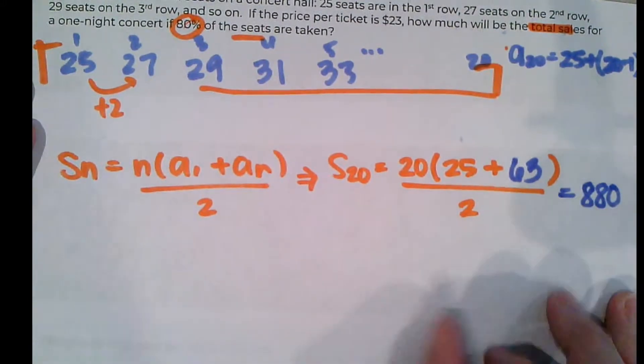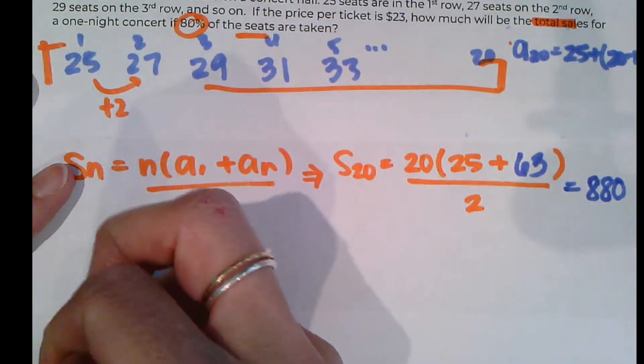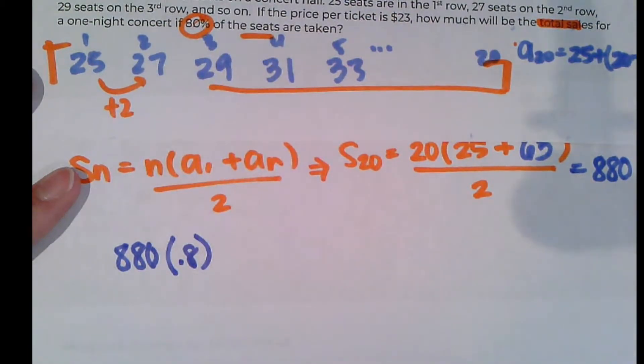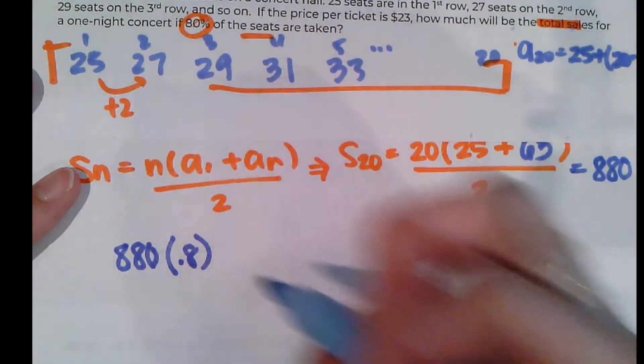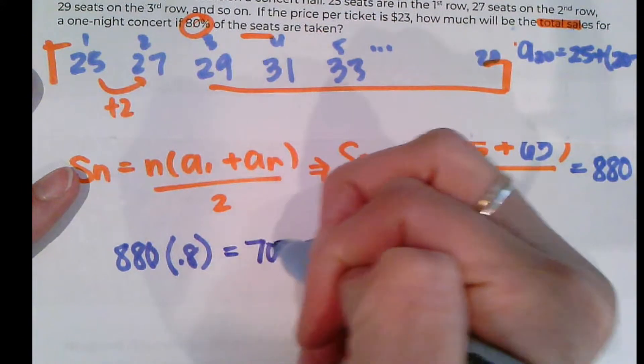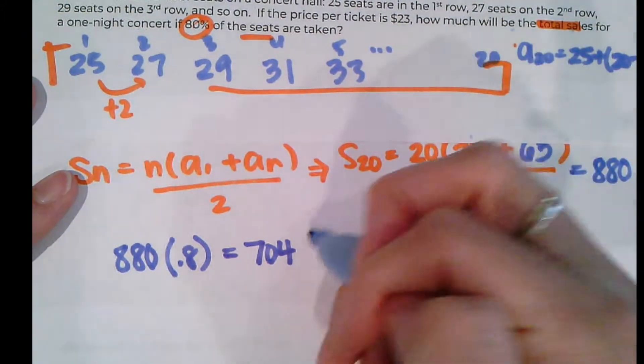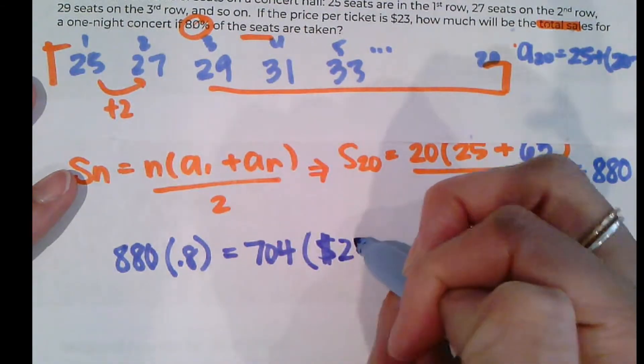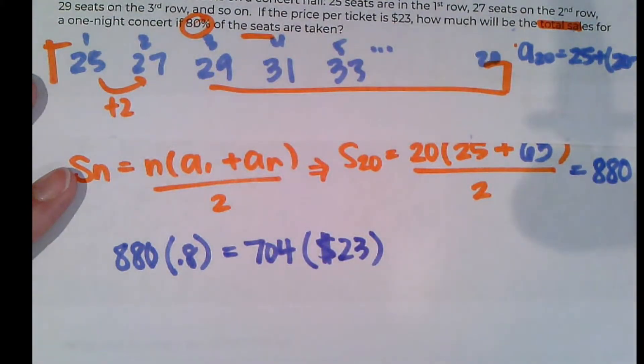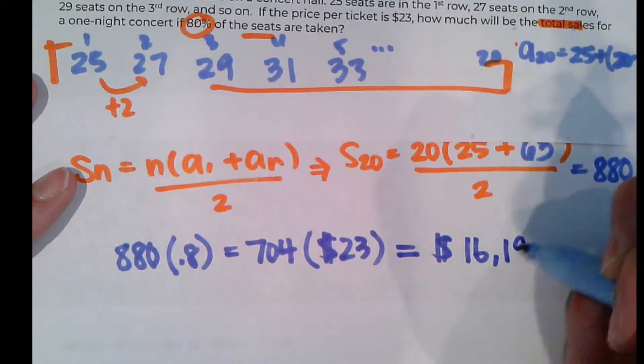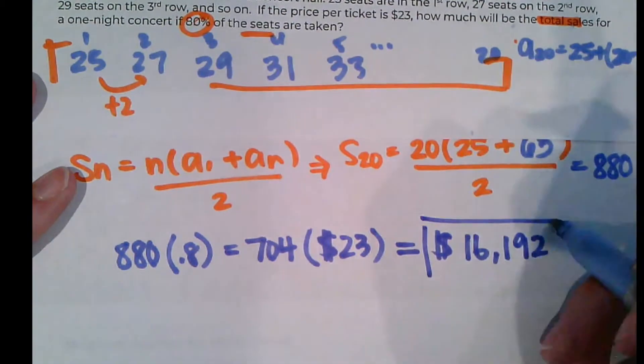Now, they only sold 80% of them. So I'm going to have to take 880 and figure out how many they actually sold. So this is going to be 704 seats sold. And they made $23 per ticket. So each of those gets them $23. They have made $16,192 on tickets.